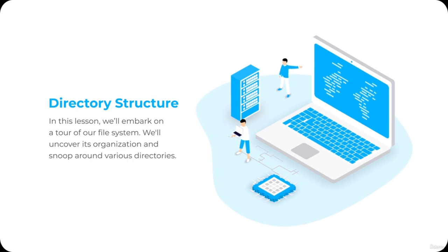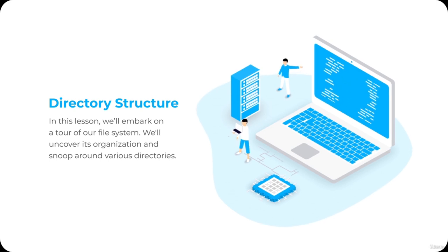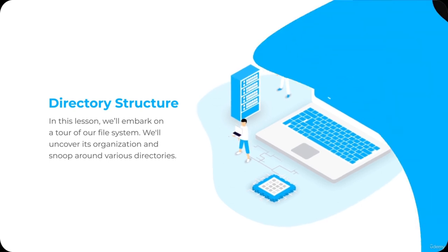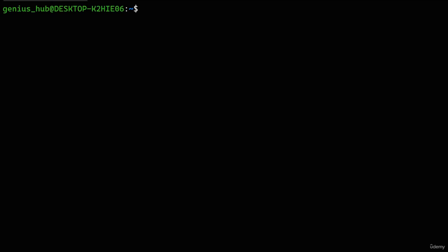Welcome to our next lesson! Today, we'll embark on a tour of our file system. We'll uncover its organization and snoop around various directories. Our system's files are neatly tucked away in different directories, each serving a specific purpose or function. Let's kick off our journey by taking a look at the contents of our root directory — we can instruct the 'ls' command to display its contents by providing its path as an argument, which is represented by a single slash.